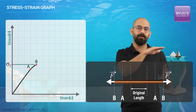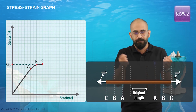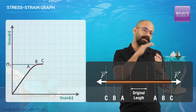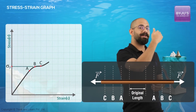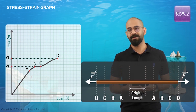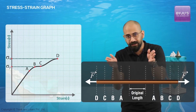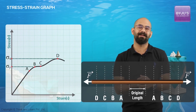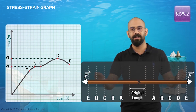If stress goes beyond point B and I try to bring it back, the wire will not return to its original length — there will be a permanent elongation even at zero stress. Then from B to C, even a small increase in stress causes a very large increase in strain. From C onwards the slope increases again — elongation is less dramatic. We reach point D, the ultimate tensile stress — the maximum the wire can withstand. Beyond D, even reducing the stress increases the strain further, and finally at point E the wire breaks completely.